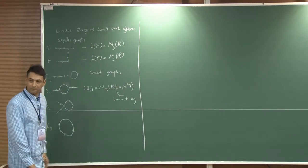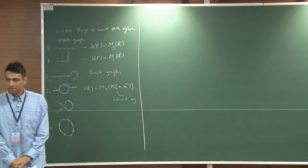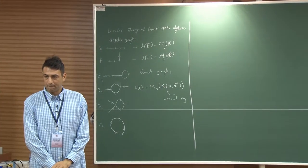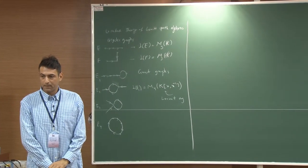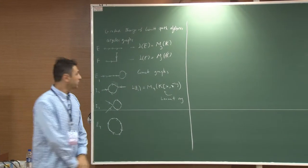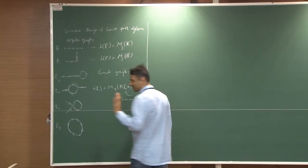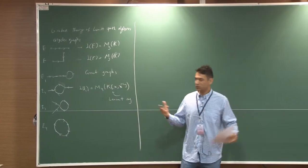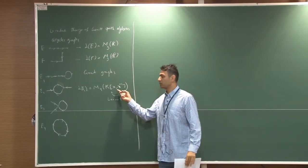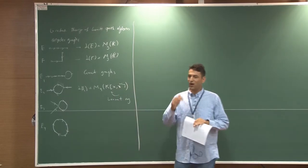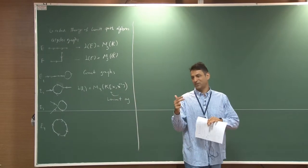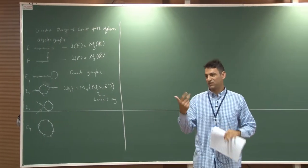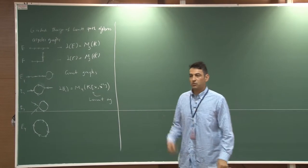If you remove two different variables — no, no. In the Leavitt Path Algebra, you never get a Laurent ring with two variables. Then you have to go to higher-rank graphs; that comes later, and you can get those.